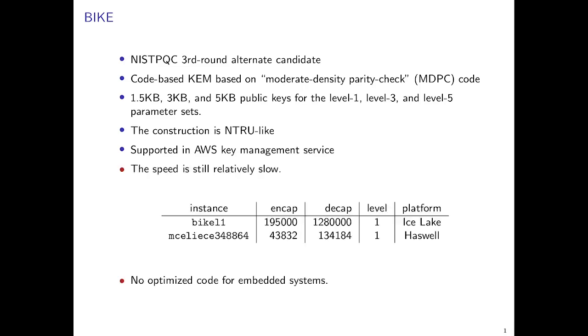For example, if you consider BIKE-L1, the level 1 parameter set of BIKE to corresponding parameter set of Classic McEliece, you can see that both encapsulation and decapsulation are much slower. There hasn't been any optimized code for embedded systems written by the BIKE team.